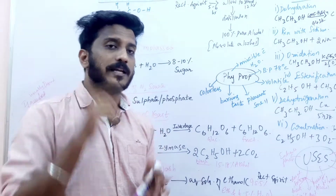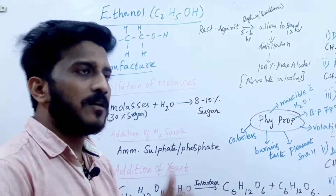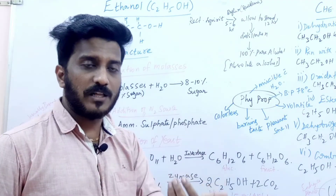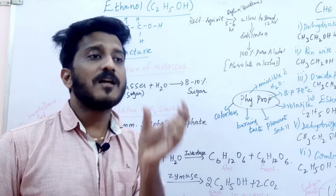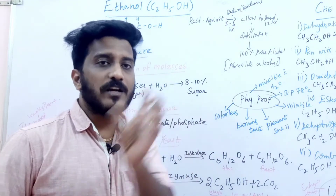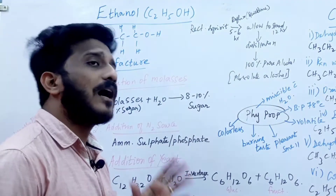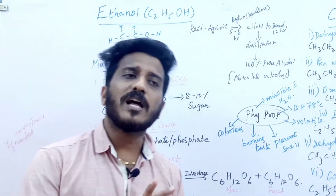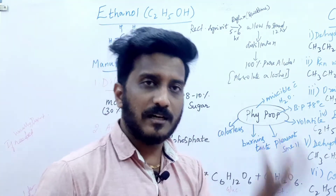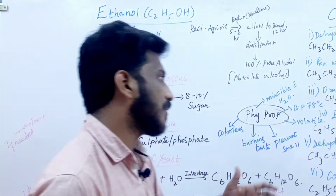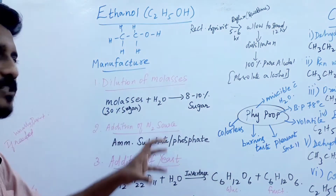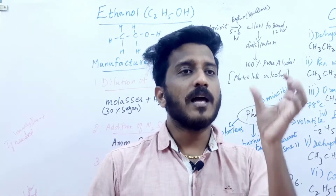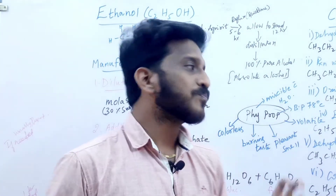To get 100% pure ethanol, we add calcium oxide and use a reflux condenser and boil it. This gives 100% pure alcohol, which is called Absolute Alcohol. Absolute alcohol is unfit for drinking. This entire process is called Fermentation, because yeast is used to ferment molasses.